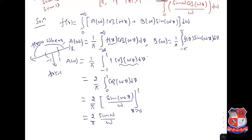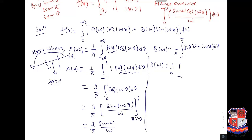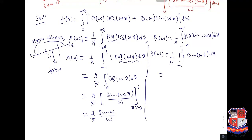For B(ω): B(ω) = (1/π) ∫₋₁^1 1·sin(ωv) dv. Since sine is an odd function, the integral over the symmetric interval minus 1 to 1 is 0. So B(ω) = 0.